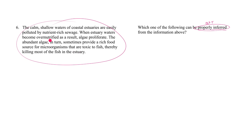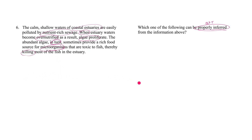At the very start of this, you have nutrient-rich sewage that finds its way into the calm, shallow waters of coastal estuaries. When that happens, the waters become over-neutrified. And when that happens, algae proliferate, which in turn get eaten up by microorganisms, which in turn kill fish. This is a long causal chain of events.